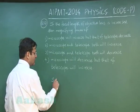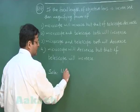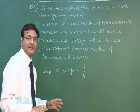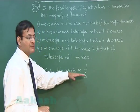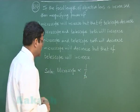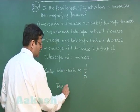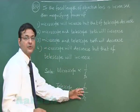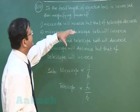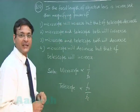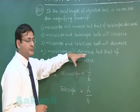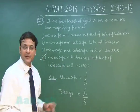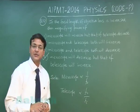For a microscope, the magnifying power is inversely proportional to the focal length of the objective — in fact, the focal length of the objective as well as the eyepiece appear in the denominator. But for a telescope, the magnifying power is f_o/f_e, so it is directly proportional to f_o. Therefore, increasing the focal length of the objective decreases the microscope magnification but increases that of the telescope.